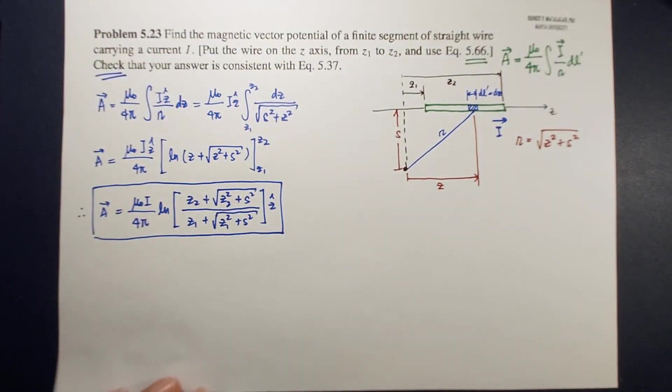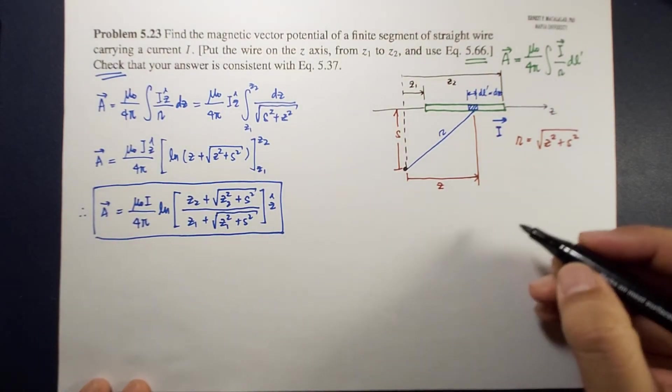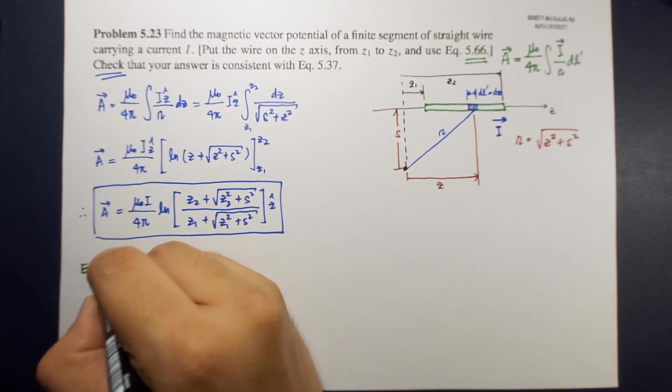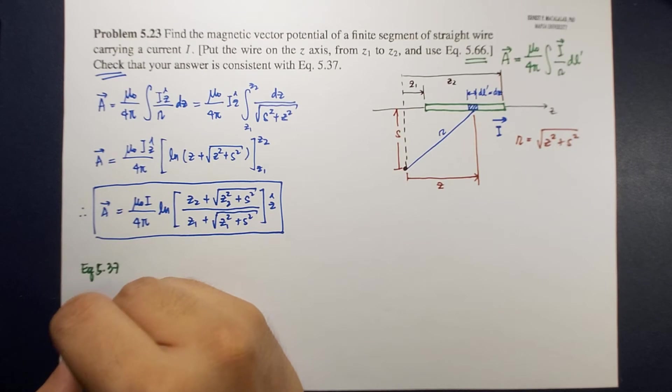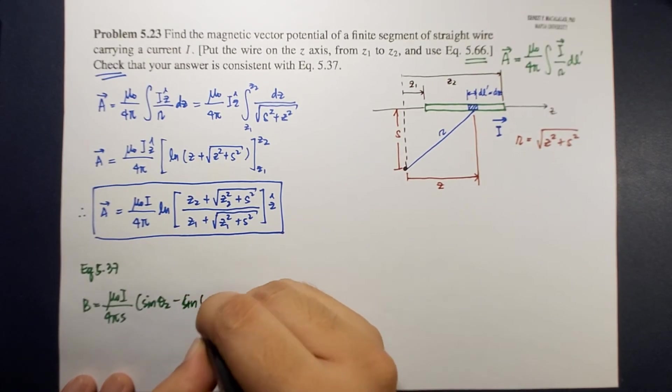Now let's check whether this answer is consistent with equation 5.37. So what is equation 5.37? Let's try to look it up. So equation 5.37 is given by B equals mu naught i over 4 pi s times sine theta 2 minus sine theta 1.